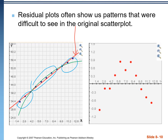It's hard to see the curve in the scatter plot, but if we look at the residual plot, we can see a distinct parabolic shape. When we look at a residual plot, we don't want to see any shape at all — we want to see complete scatter, no patterns, no shape.